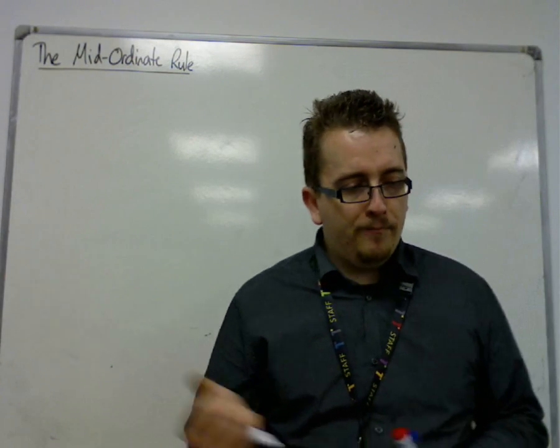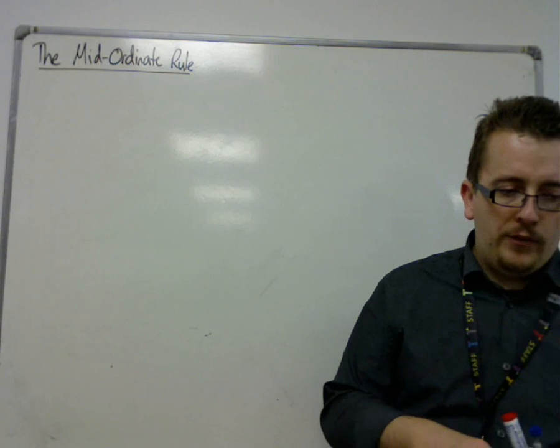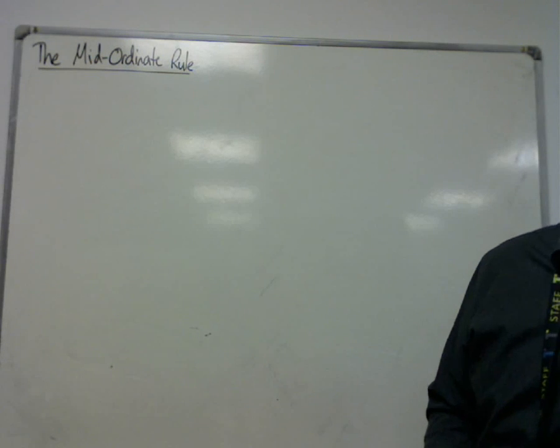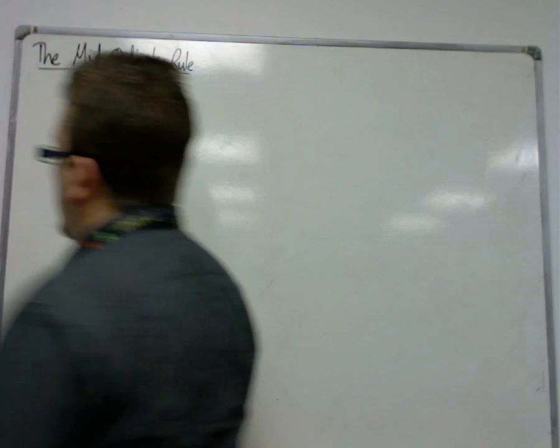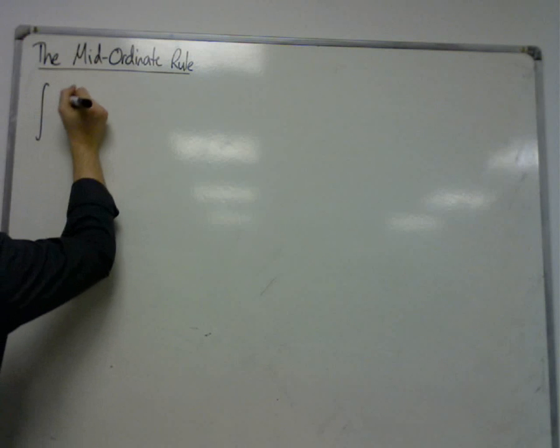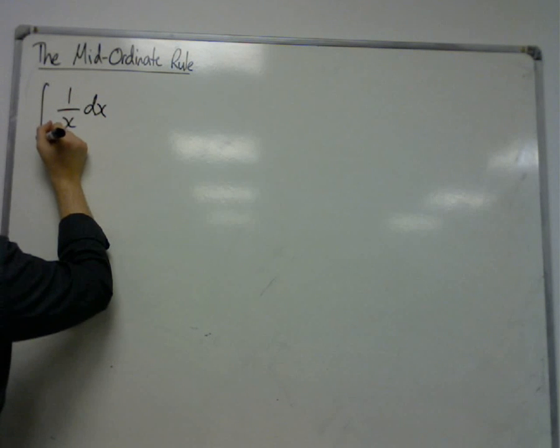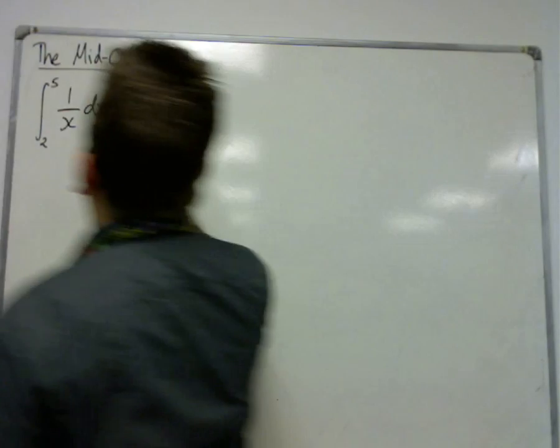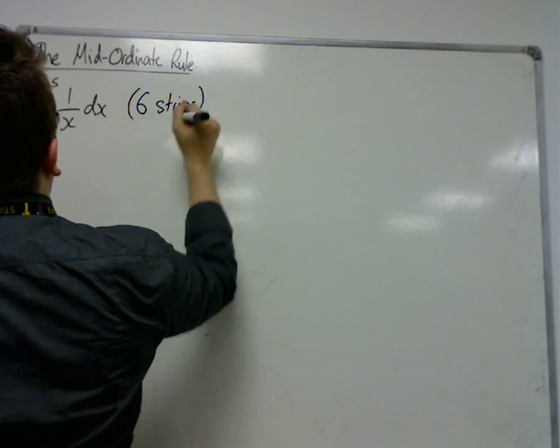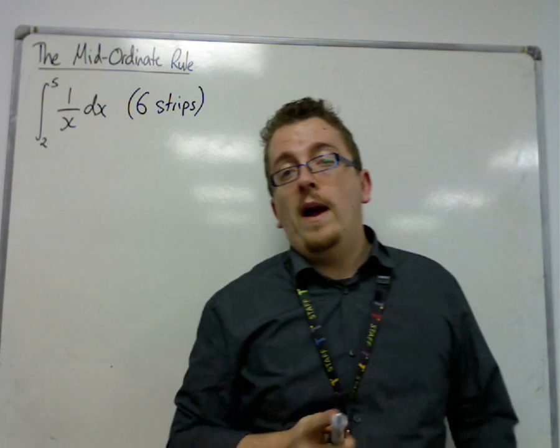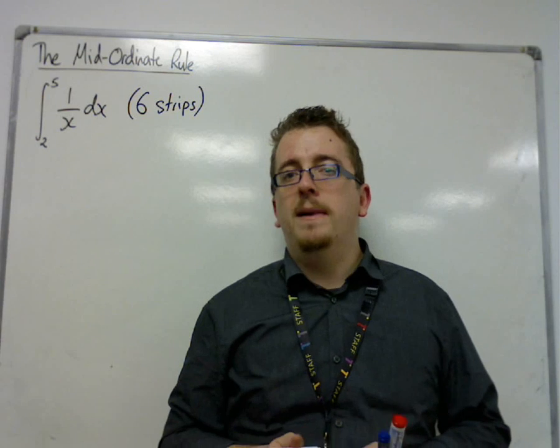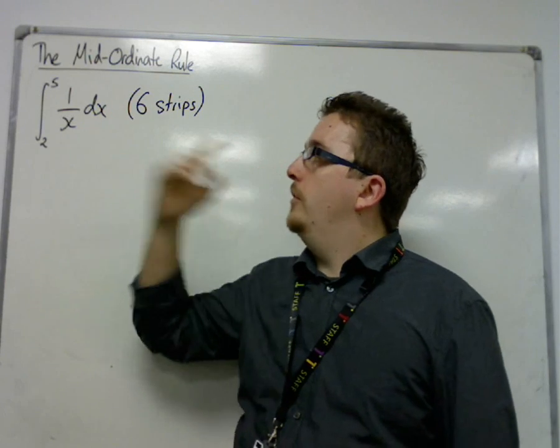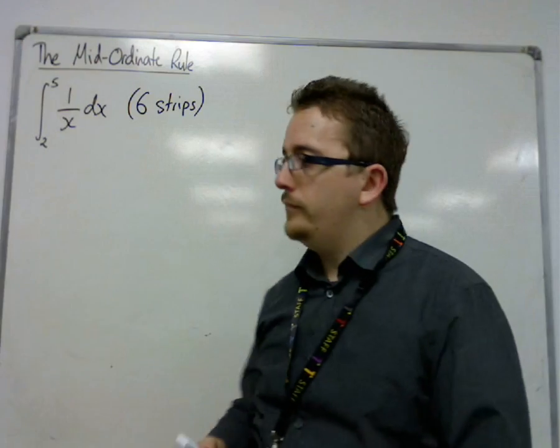So let's take an example. Let's take an example of integrating 1 over x dx between 2 and 5, and let's say we have 6 strips. So as an introduction, the mid-ordinate rule is a way of numerically estimating the area under the curve, or between the curve and the x-axis, of 1 over x between x is 2 and x is 5.